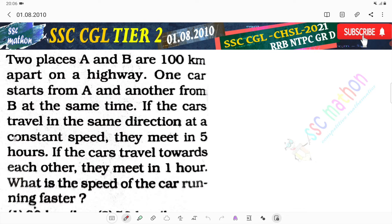Two places A and B are 100 km apart on a highway. One car starts from A and another from B at the same time. If the cars travel in the same direction at a constant speed, they meet in 5 hours.